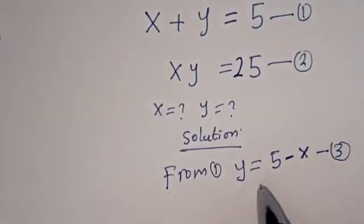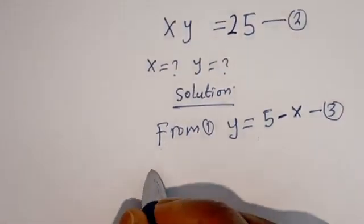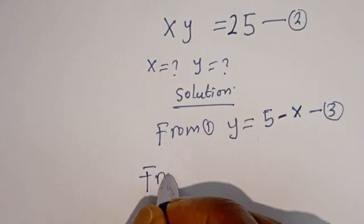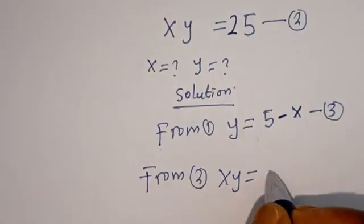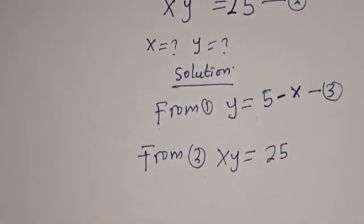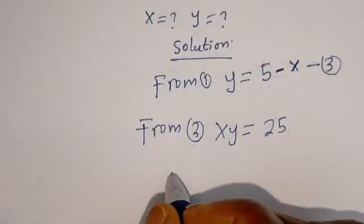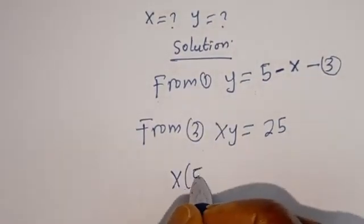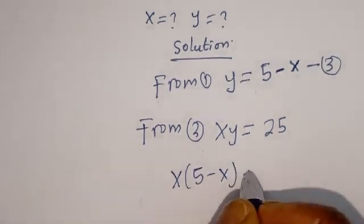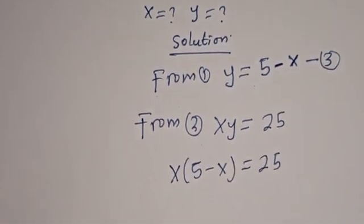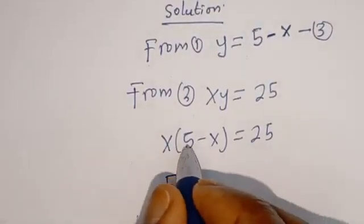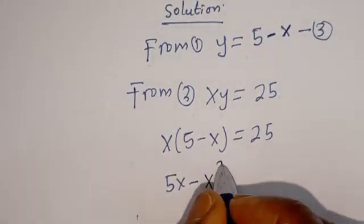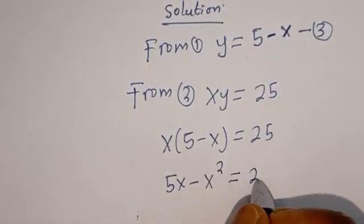We can now substitute equation 3 into equation 2. From equation 2, x times y is equal to 25. When y is equal to 5 minus x, we have x times (5 minus x) is equal to 25. Then, x times 5 is 5x, minus x times x, that is minus x squared, is equal to 25.